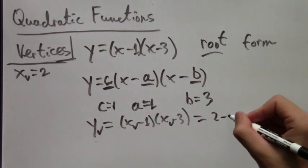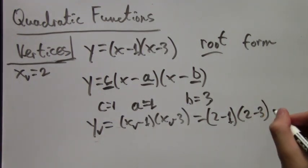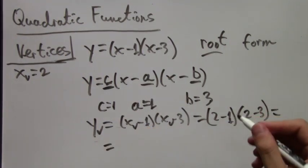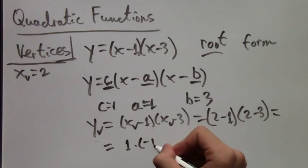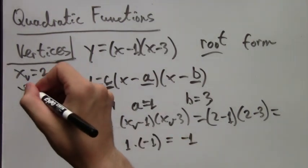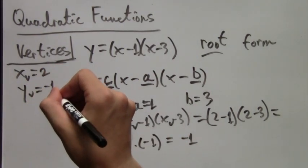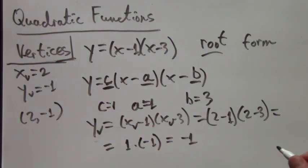So, we get yv equals, and we just have to plug in xv into our formula, and we know that xv is 2. So, we get 2 minus 1, which is 1, times 2 minus 3, which is negative 1. Which is just, when we multiply it, we get negative 1. So, the y-coordinate of the vertex is negative 1. So, we get the point (2, -1).